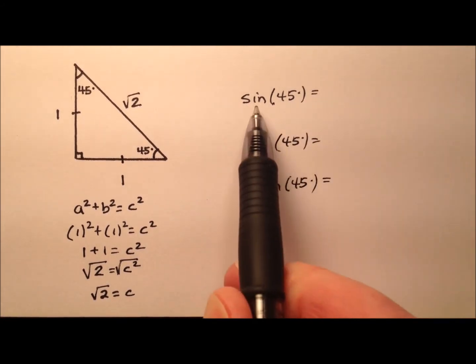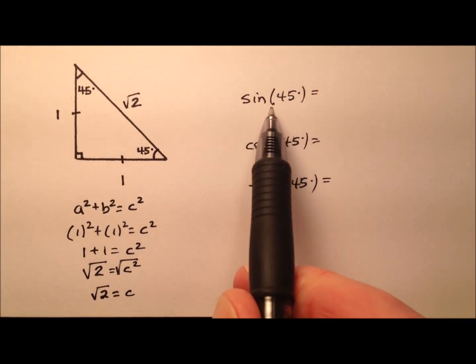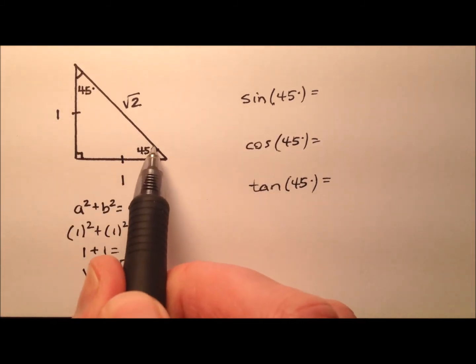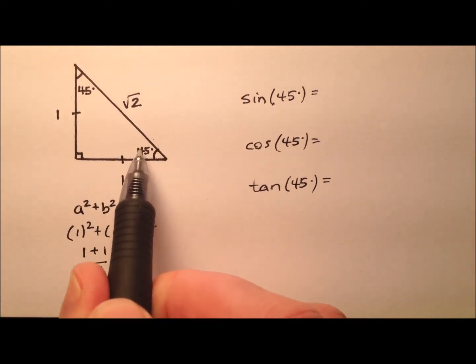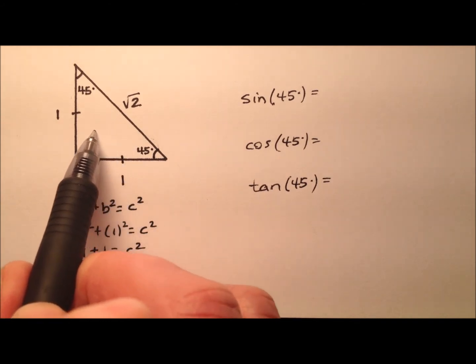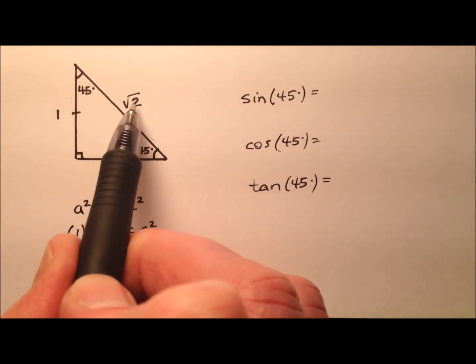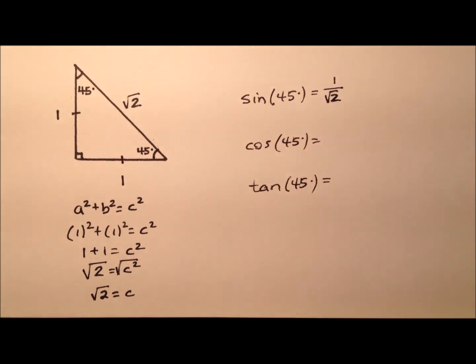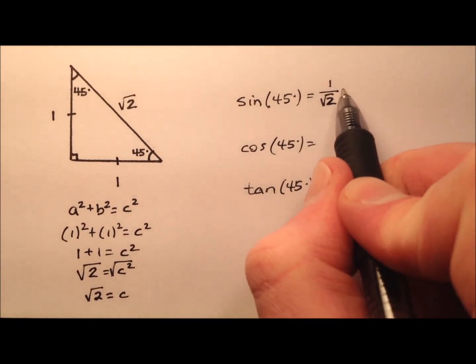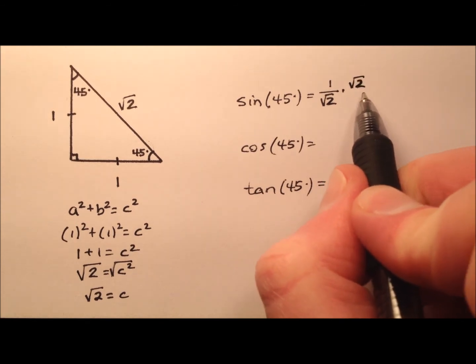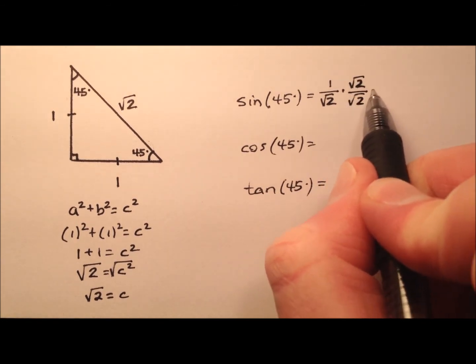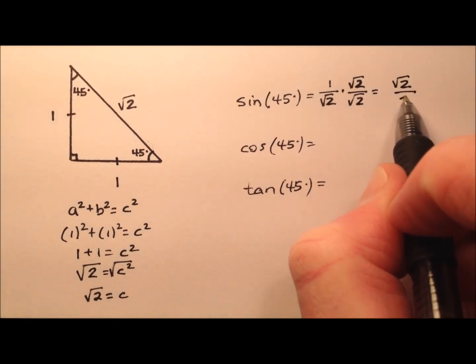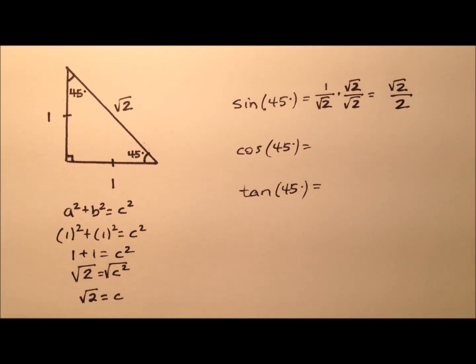Remember the ratio for sine is opposite over hypotenuse. So we can go from either angle, let's go from this lower 45 degree angle. The opposite side will be one, and the hypotenuse is the square root of two, so I'll say 1/√2. Let's go ahead and rationalize that because we don't like to have the square root in the denominator, so when I rationalize, I'll end up with √2/2 for sine of 45 degrees.